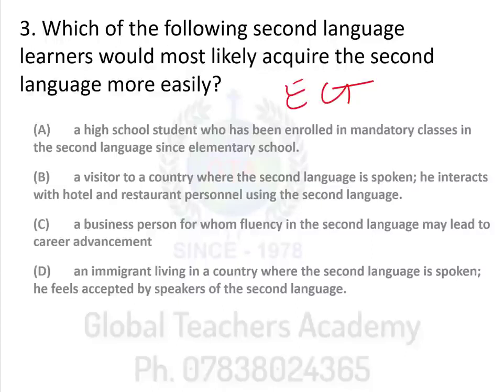The question asks: which of the following second language learners would most likely acquire the second language more easily? Option A: a high school student enrolled in mandatory classes in the second language since elementary school. Option B: a visitor to a country where the second language is spoken, interacting with hotel and restaurant personnel. Option C: a business person for whom fluency in the second language may lead to career advancement. Option D: an immigrant living in a country where the second language is spoken who feels accepted by the speakers.